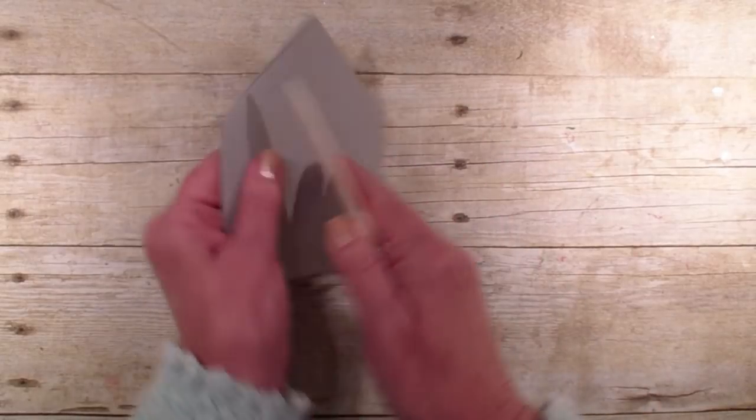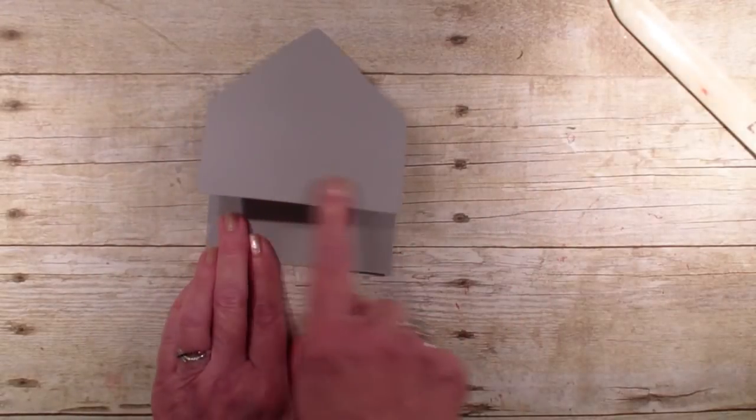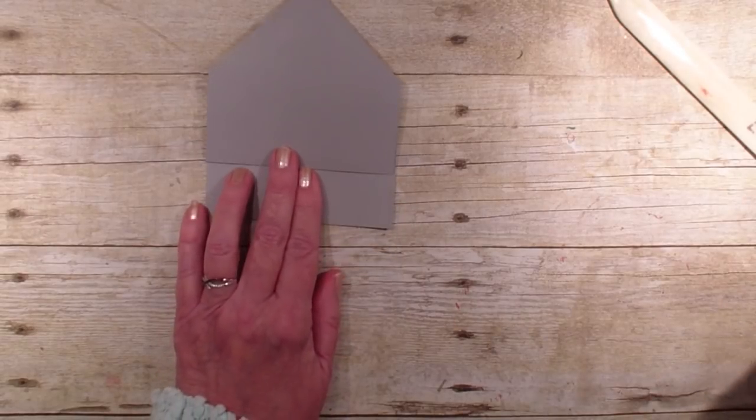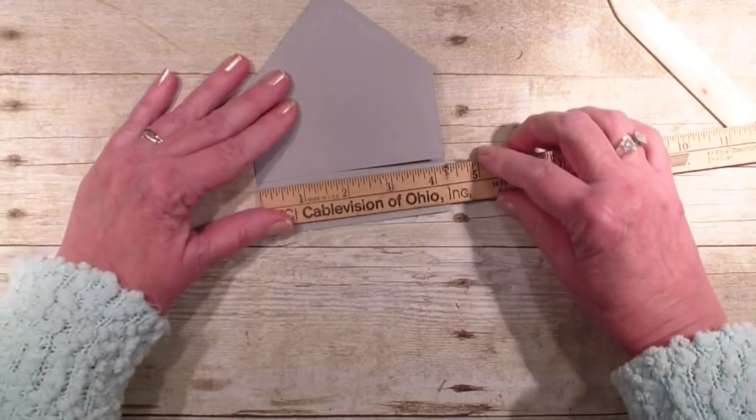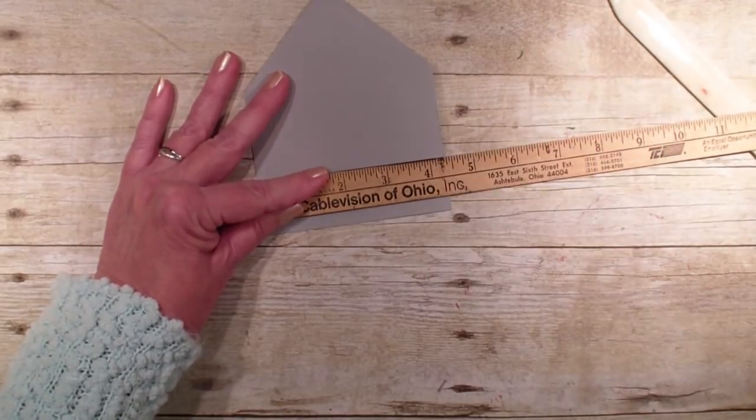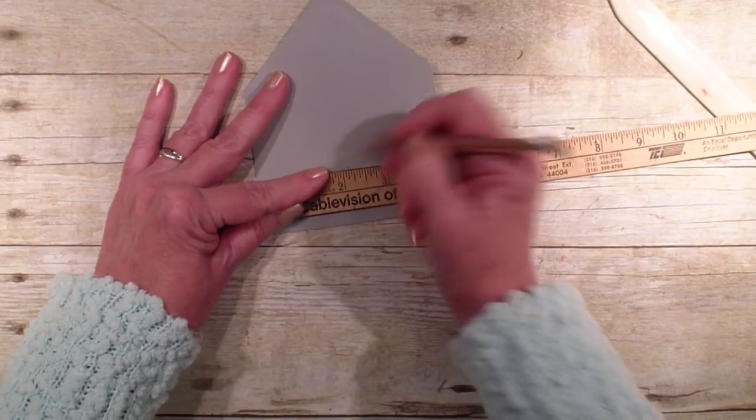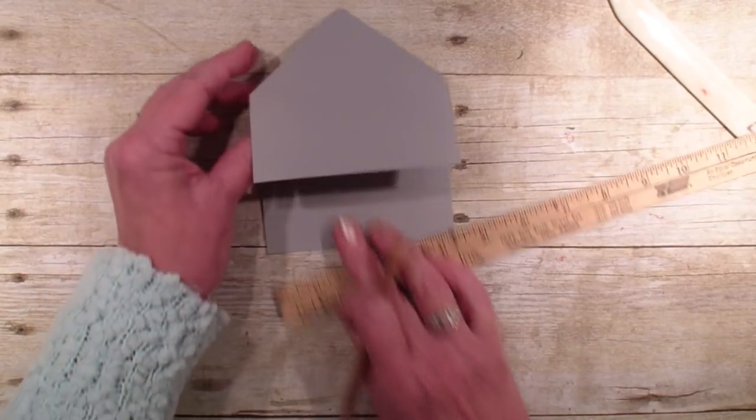So you're going to bring in your bone folder and score those down. Now we're going to take the top flap here, and we are going to mark it at 2 1⁄8 this way. Because the card is 4 1⁄4 inches, 2 1⁄8 is at the half.